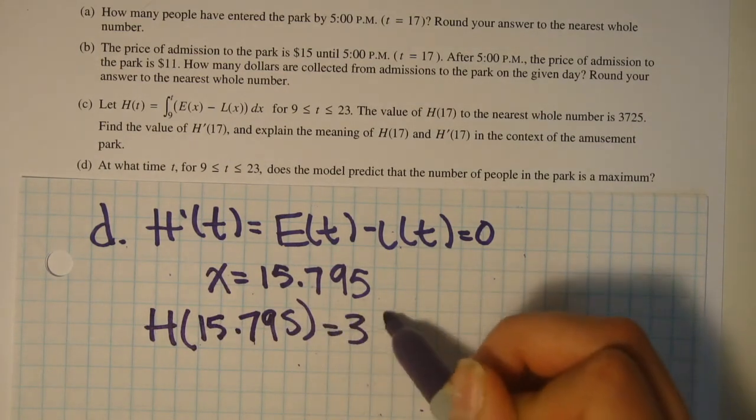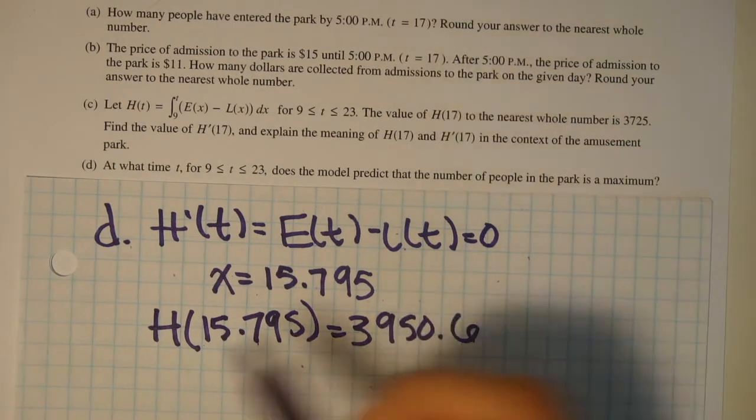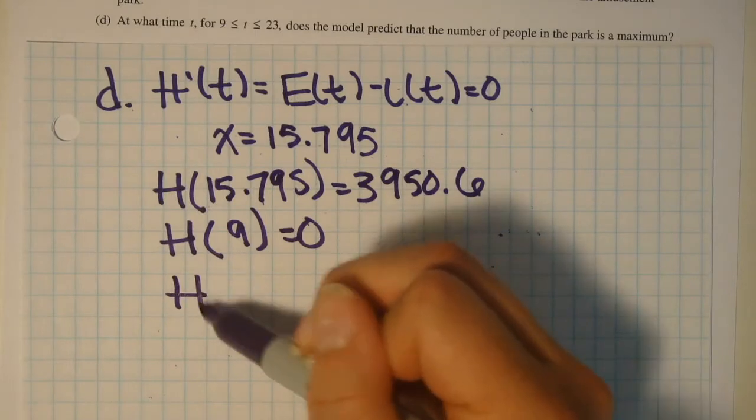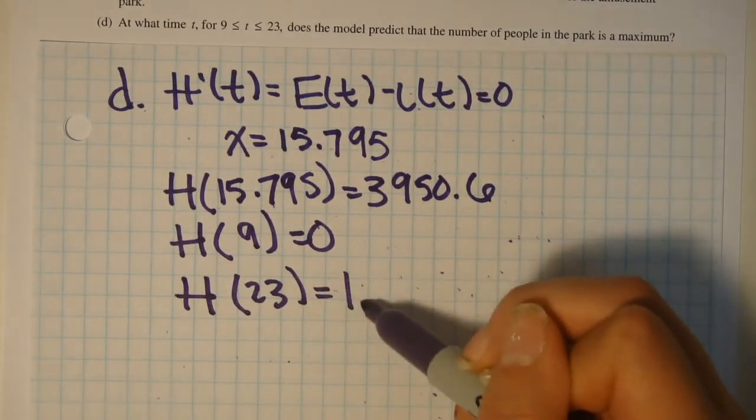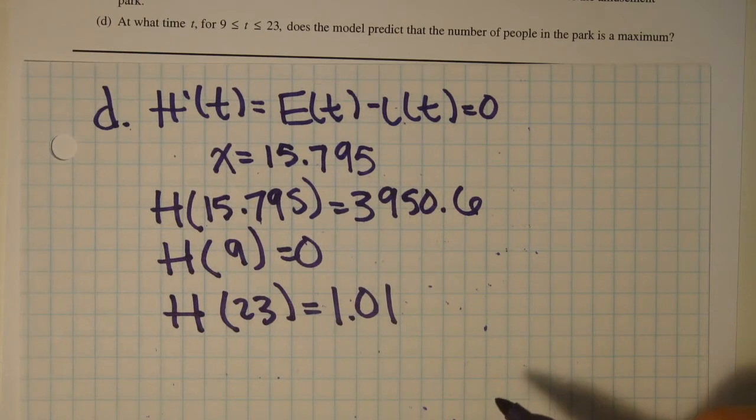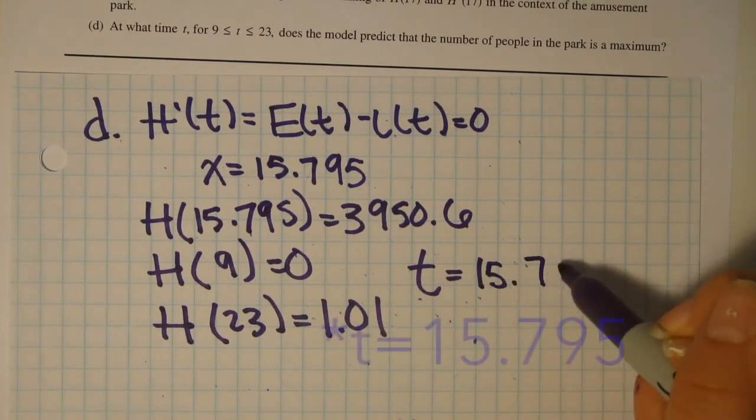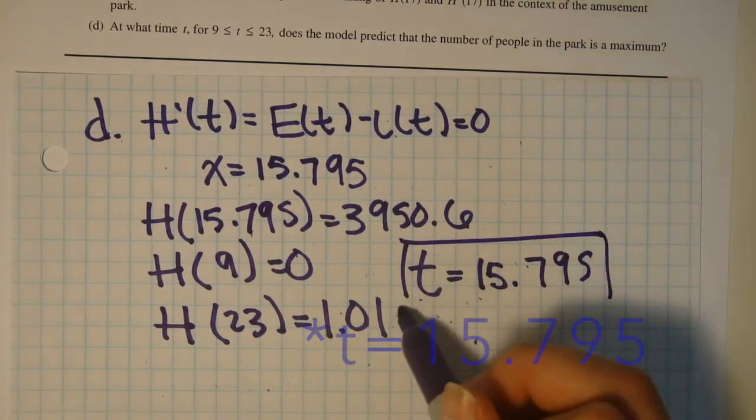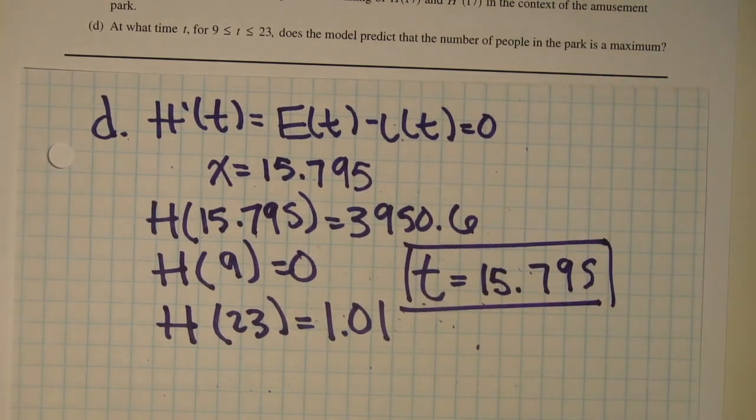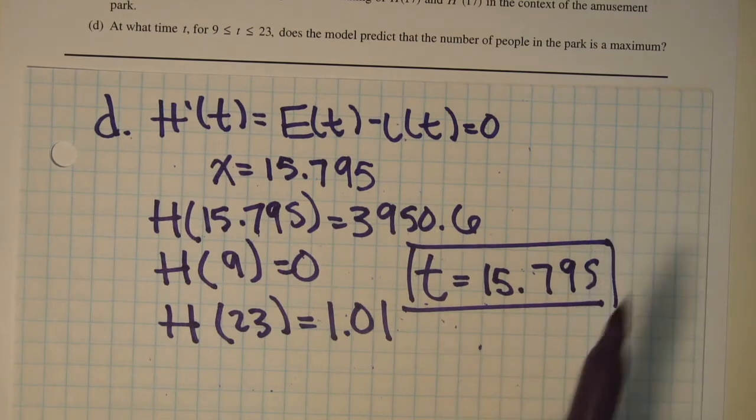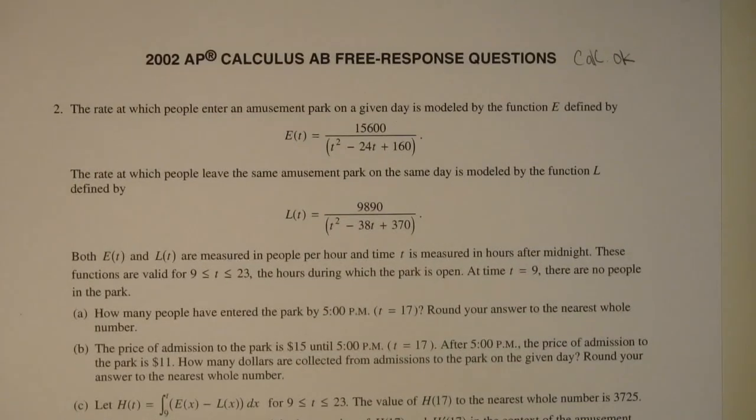And we should get 3950.6. And if we test h(9), we get 0. And h(23) is 1.01. So out of all of this, it is clear to see that the maximum value that we can get is from plugging in t equals 15.795. So this is our answer. For this problem, you get points for the answer and the setup. So make sure you have this all nice and clear. And that is how you solve number 2 from the 2002 AP Calculus AB free response question.